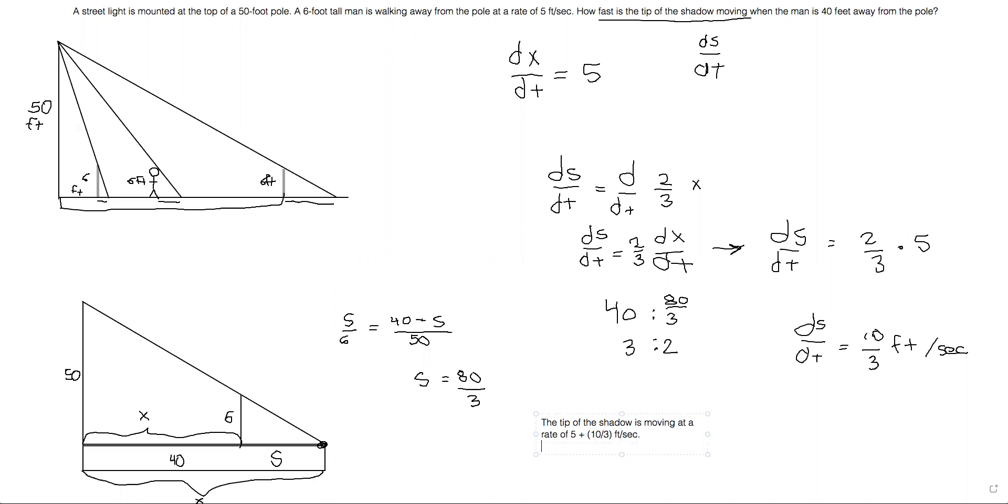The reason why it's five plus 10 thirds is because five would be the rate that the man is traveling. I'm sorry about the variable delegation getting really messy, but hopefully you'll be able to understand my thought process and understand the answer. Let me know if you have questions. I'm always available to answer questions if you have them. So it would be the rate that the man is traveling plus the rate that the shadow is traveling. That's why we do five plus 10 thirds. So we get an answer of 25 thirds feet per second as our answer.